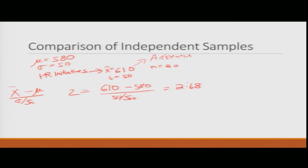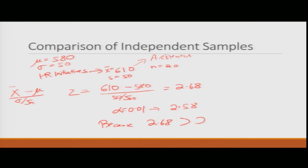You look at the z-table and suppose you want a confidence interval of 99 percent. So alpha equals 0.01, and the critical z value for alpha 0.01 comes out to be 2.58. Because 2.68 is greater than 2.58, this means that for 99 percent of cases the mean has actually changed. This shows it is no more an accident — assuming a 99 percent confidence interval, your HR initiatives have actually worked. Congratulations.